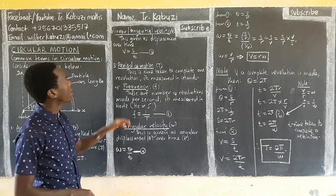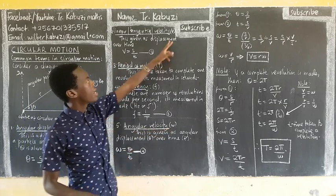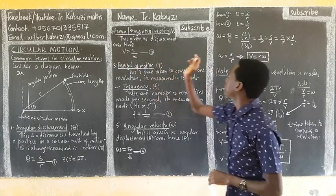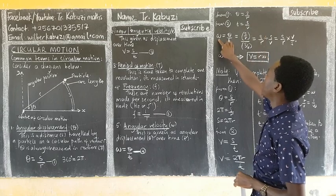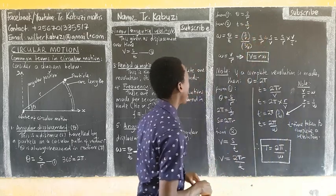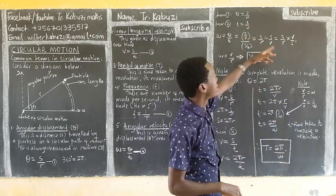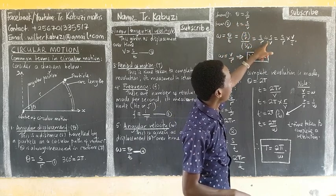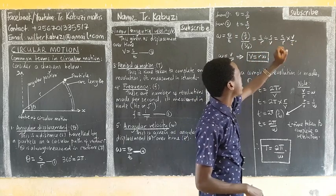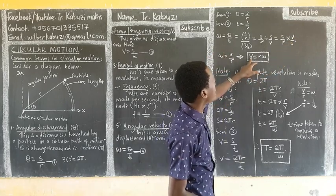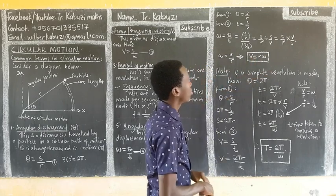From equation one, theta equals S over R. From equation two, making T the subject gives T equal to S over V. Since angular velocity omega equals theta over T, substituting both expressions: omega equals (S/R) divided by (S/V). Dividing, we take the reciprocal, so the S cancels, and we get omega equals V over R — meaning the linear velocity V equals omega times R.